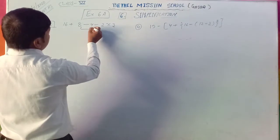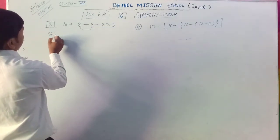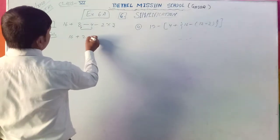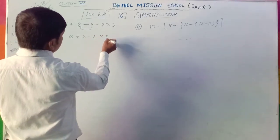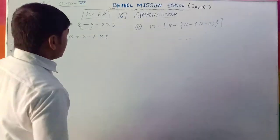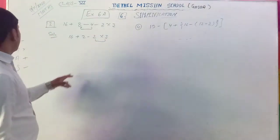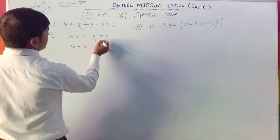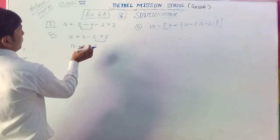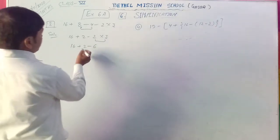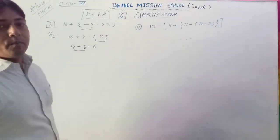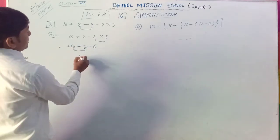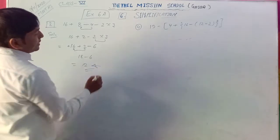Division is given, so first you have to divide. That gives 16 plus 8 divided by 4, minus 2. Now we have plus, minus, and multiplication symbol. According to BODMAS, do multiplication first: 16 plus 2, minus 6. Now addition — since both are positive numbers, add 16 plus 2 first: 18 minus 6. That is 12. So 12 is the answer.